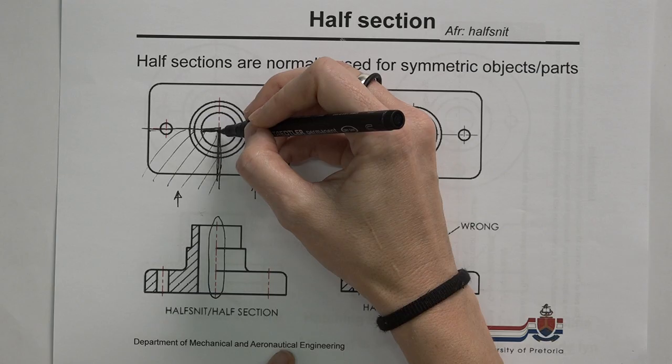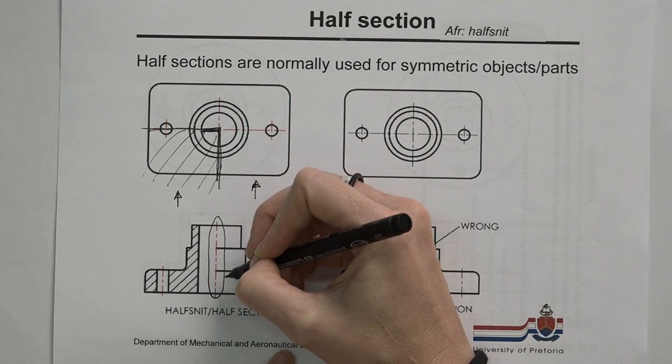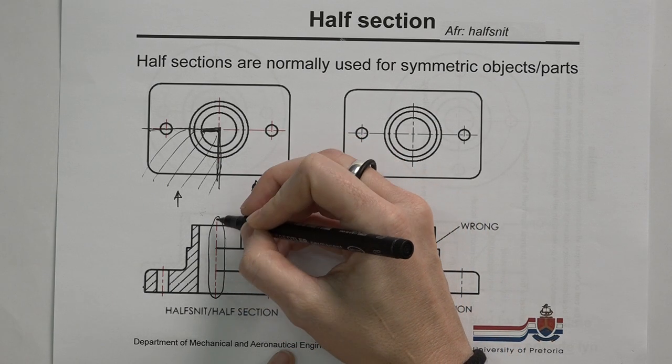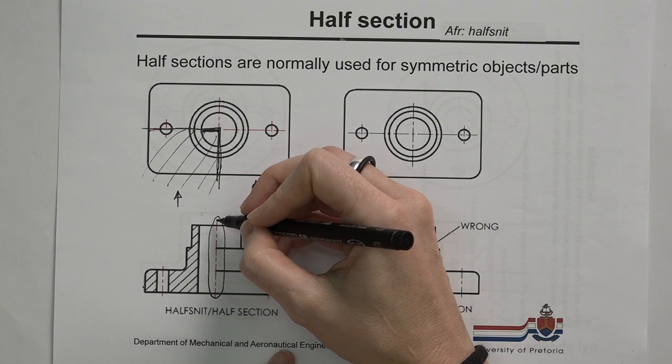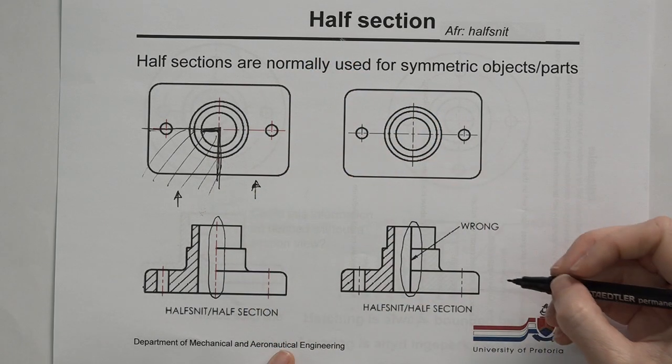So because I'm cutting into an empty space, when I have my line which divides between the section and non-section, you only have a section line or a center line. So you only show the center line, and you do not show any solid lines in that case.